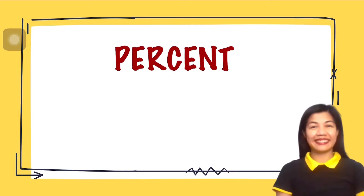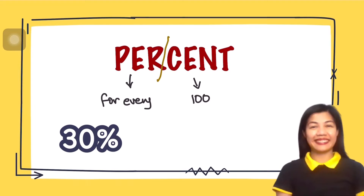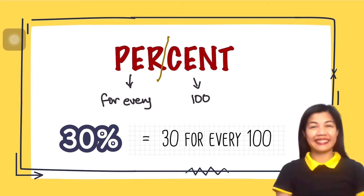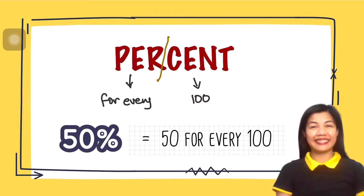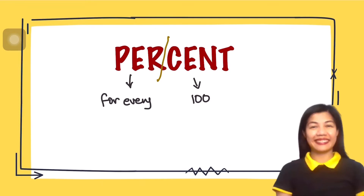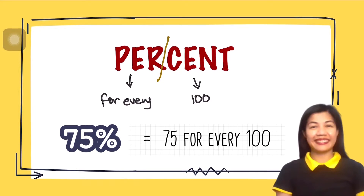Percent came from two words: per and cent. When you say per, it means for every. And when you say cent, it means 100. Therefore, percent means for every 100. So for example, 30 percent means 30 for every 100. If we say 50 percent, it means 50 for every 100. And likewise, if we say 75 percent, it means 75 for every 100.